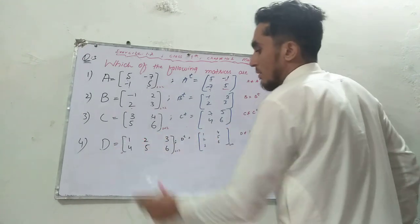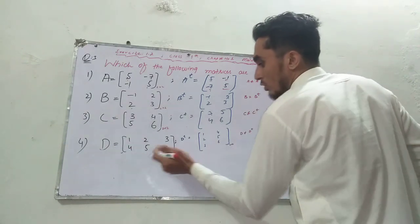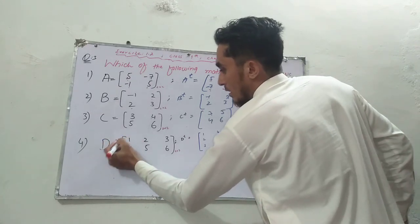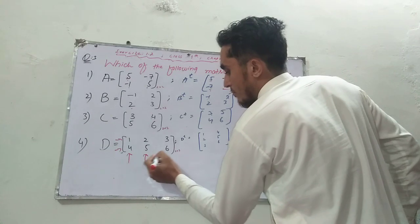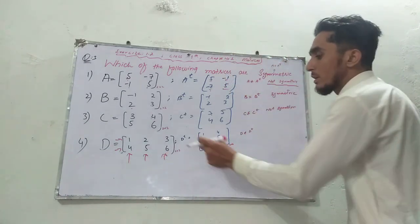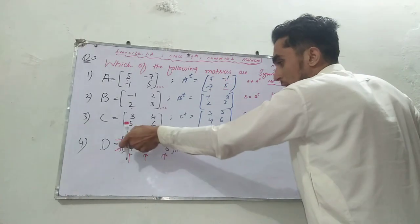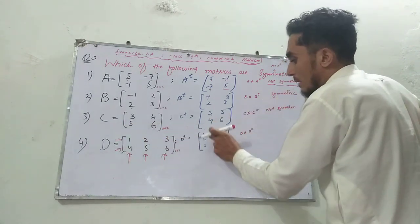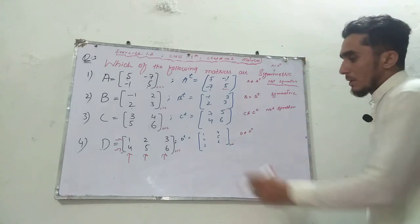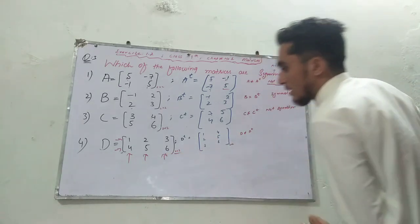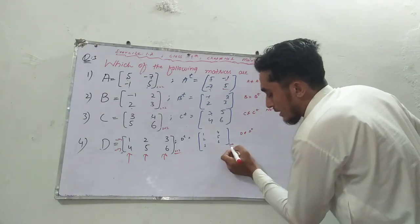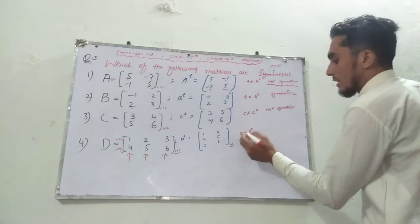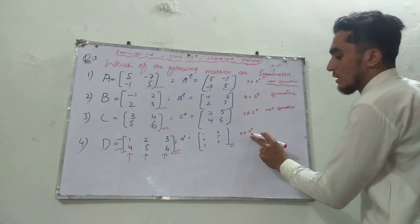The next question is D. This is a 2 cross 3 matrix - 2 rows and 3 columns. When we transpose, row 1 becomes column 1, row 2 becomes column 2. This gives us 3 cross 2. The original is 2 cross 3, the transpose is 3 cross 2. These are not equal, so D transpose does not equal D. This is not symmetric.